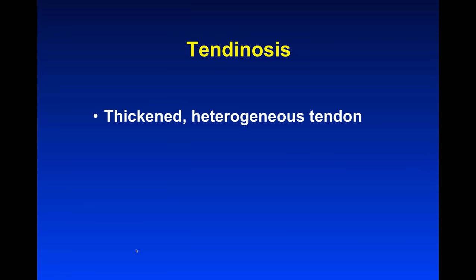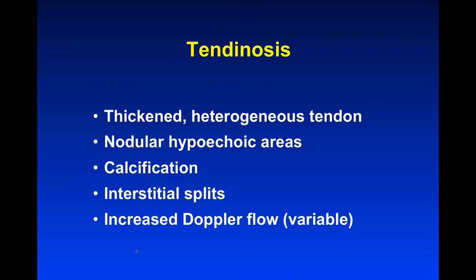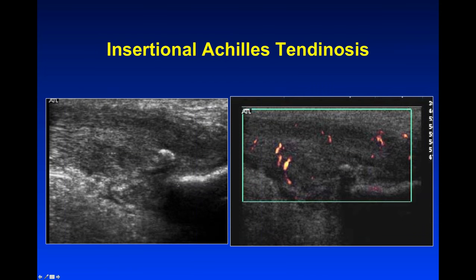On ultrasound, because of those pathologic changes, the tendon will thicken due to scar tissue and mucoid degeneration, and become heterogeneous. You may see nodular hypoechoic areas corresponding to the degenerated areas. Calcifications can occur and look bright. Interstitial splitting and increased Doppler flow are variable but common findings. Here is an insertional Achilles tendinosis — right where the Achilles comes down to the bone, it's very thick and very heterogeneous. The fibers are still there but separated by degenerated material. There's a calcification, a partial tear, and random blood flow as well.